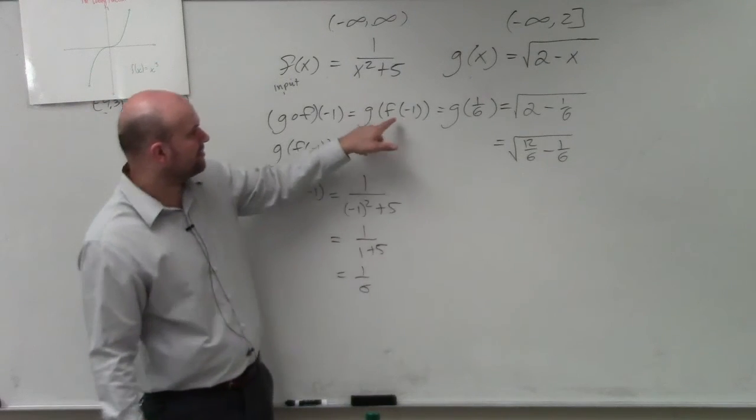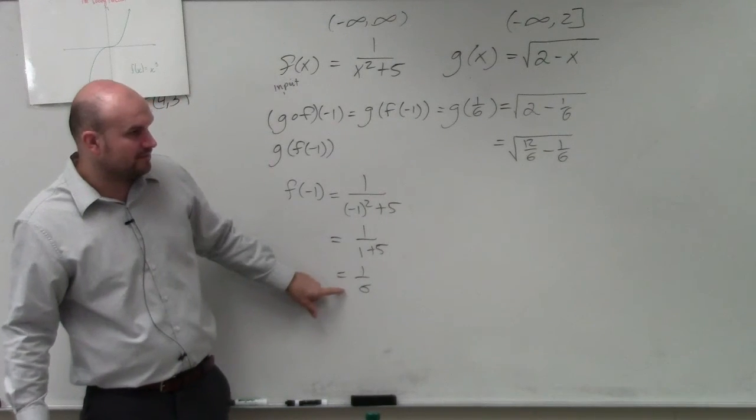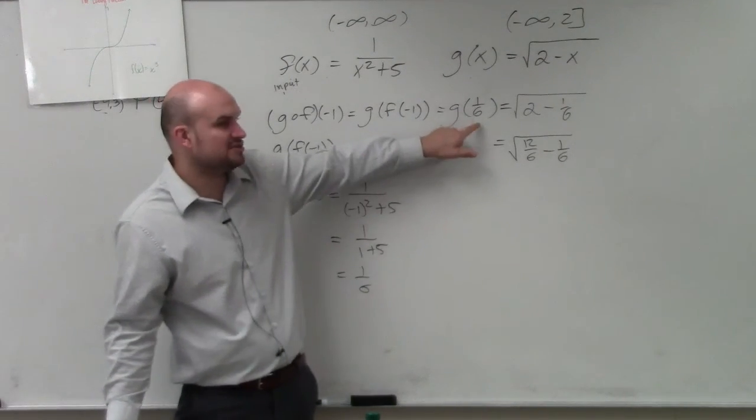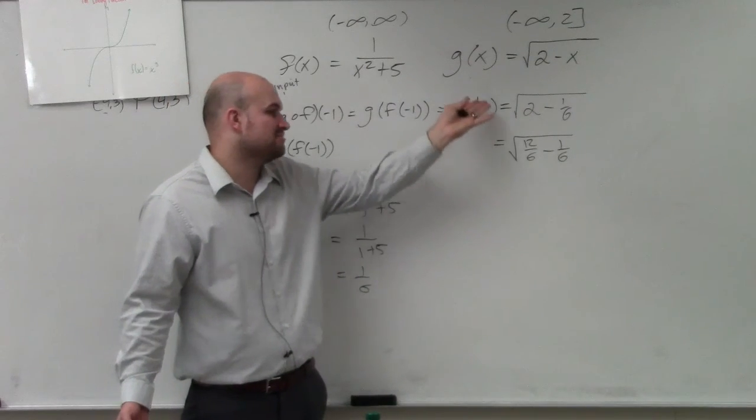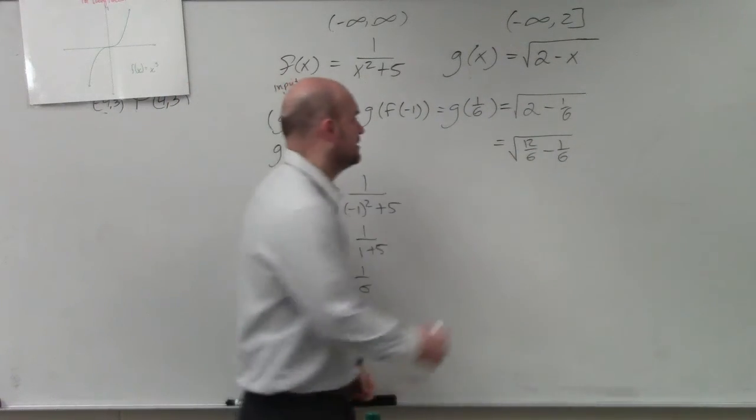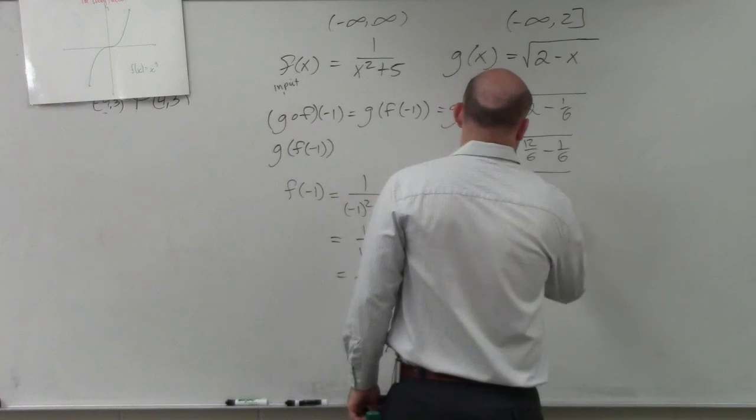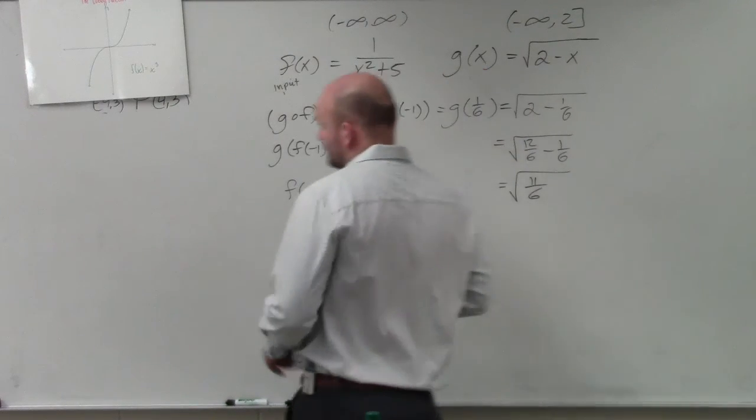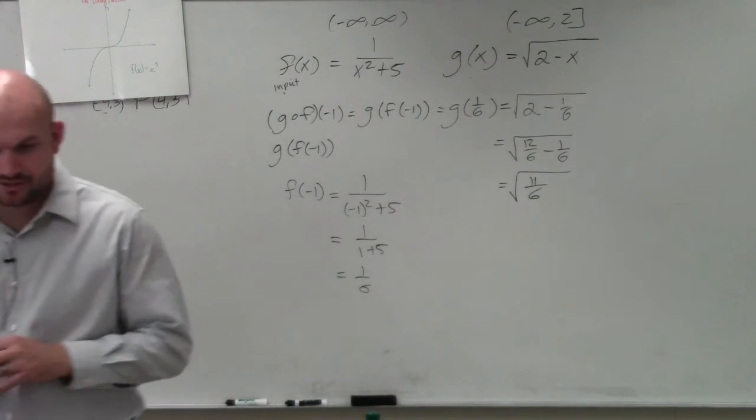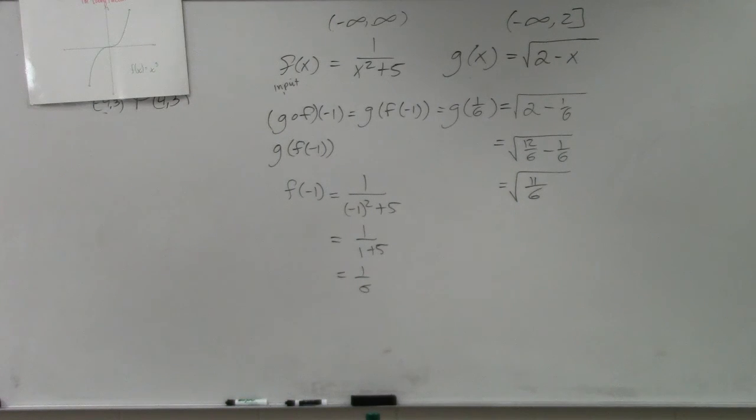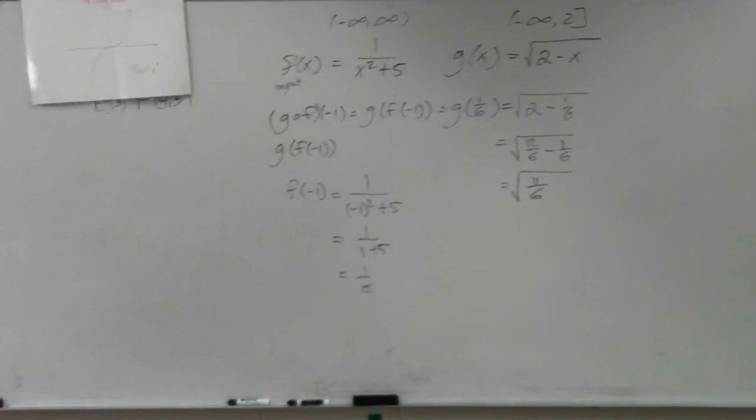So therefore, I'm just doing g of 1 over 6. So now I'm just plugging 1 over 6 in for x, and I end up getting 11 over 6 as my final answer. And since we're finding a value, we're not finding a domain, so that's okay.